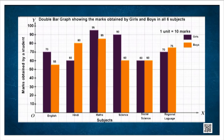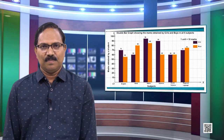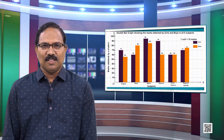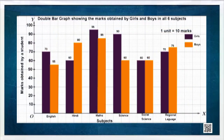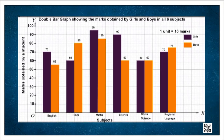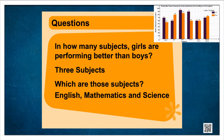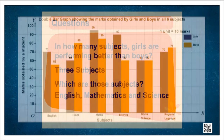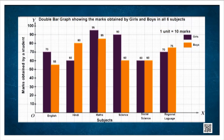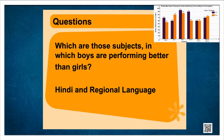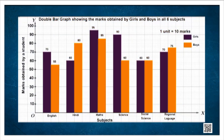The data provided in the table has been converted into a graphical form. In how many subjects are girls performing better than boys? In three subjects: English, Mathematics, and Science. Which subjects are boys performing better than girls? In Hindi and Regional Language. How is the performance of boys and girls in Social Science? They are the same.